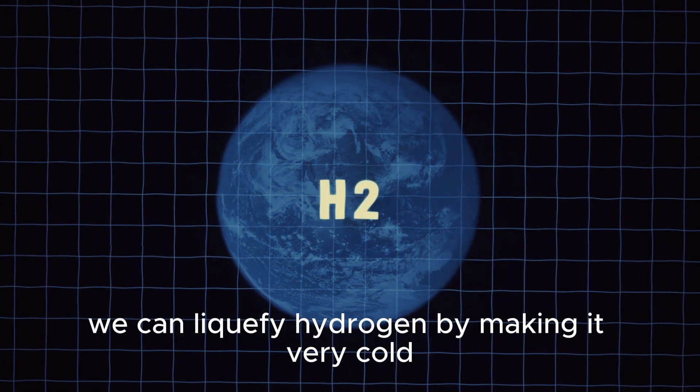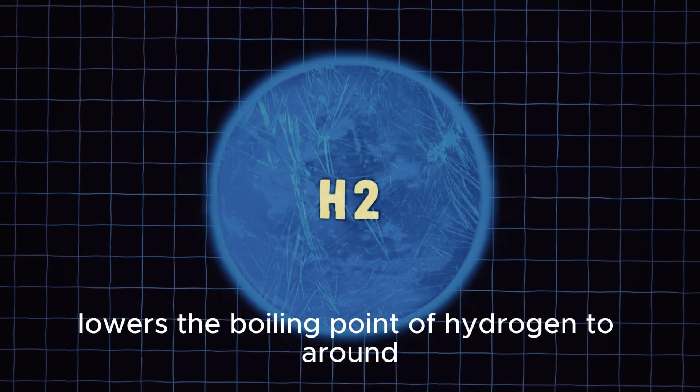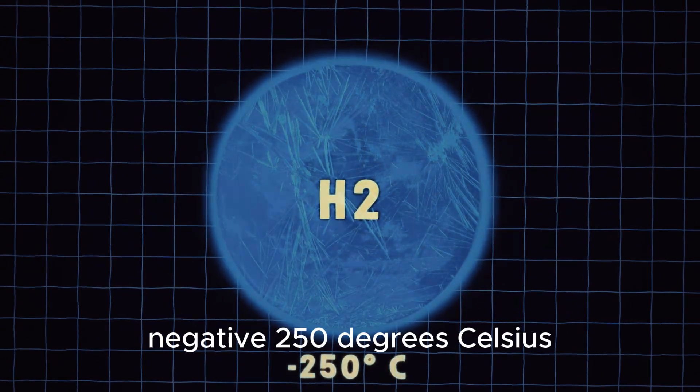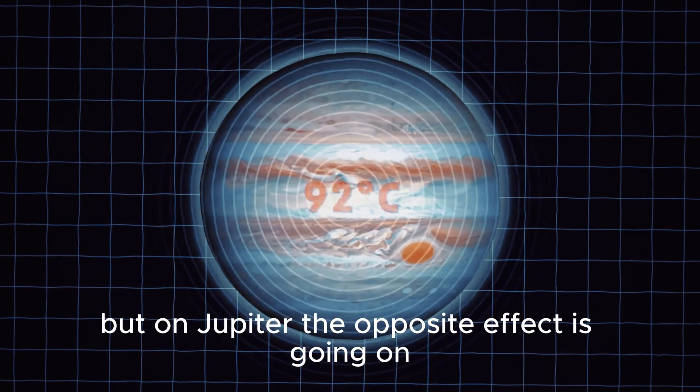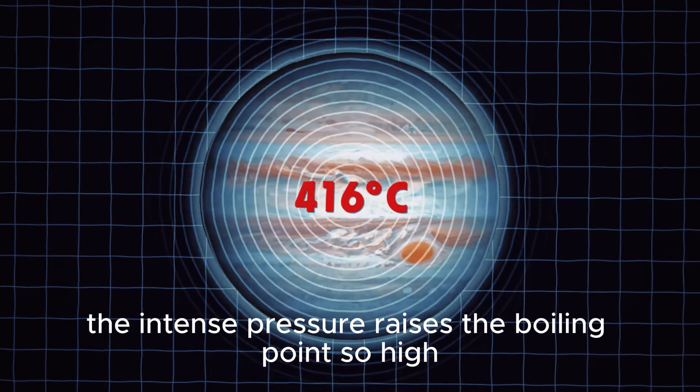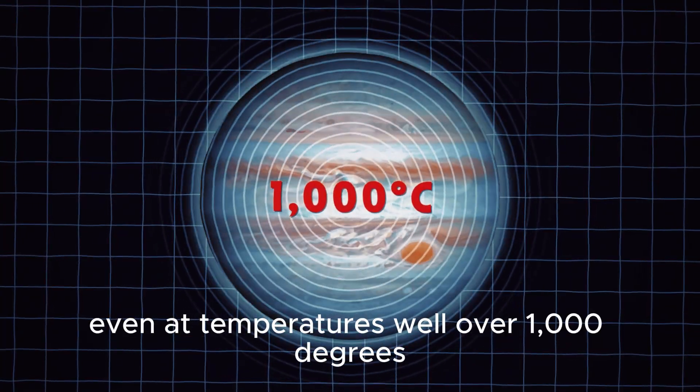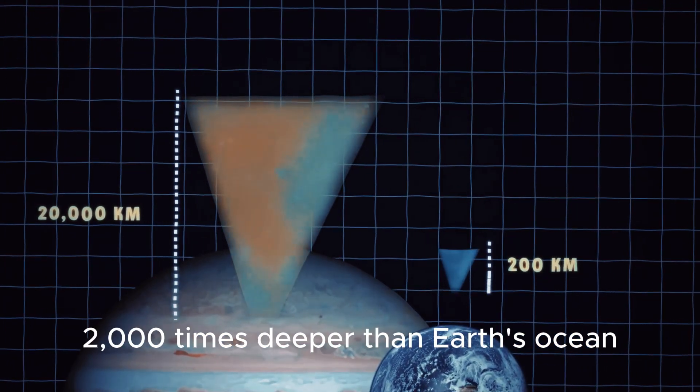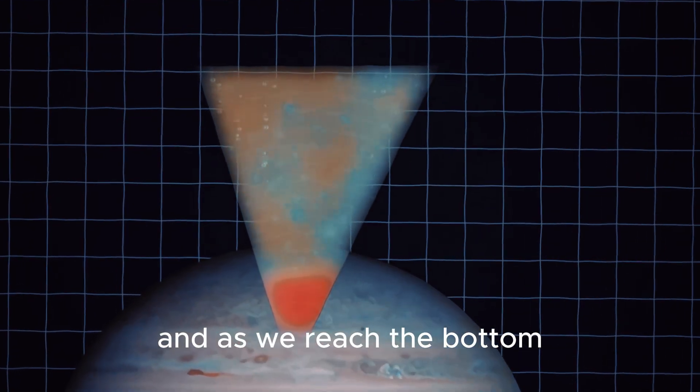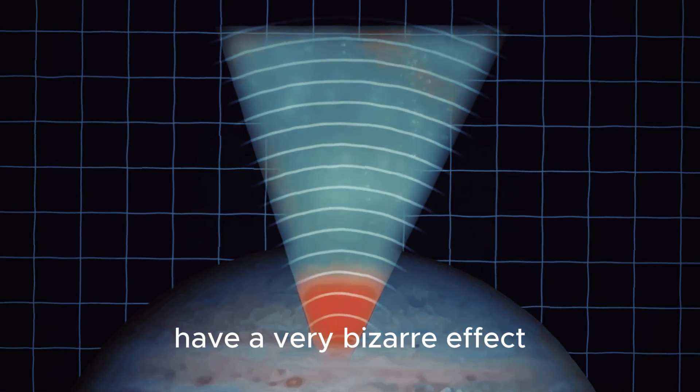On Earth, we can liquefy hydrogen by making it very cold. The atmospheric pressure of Earth lowers the boiling point of hydrogen to around negative 250 degrees Celsius. But on Jupiter, the opposite effect is going on. The intense pressure raises the boiling point so high that it can exist as a liquid even at temperatures well over 1,000 degrees. This ocean is about 20,000 kilometers deep, 2,000 times deeper than Earth's ocean, and as we reach the bottom, the pressure and temperature created by the gravity well have a very bizarre effect.